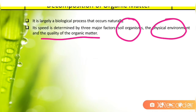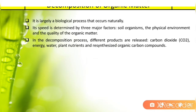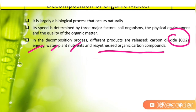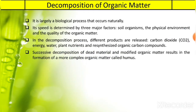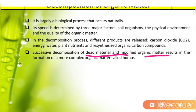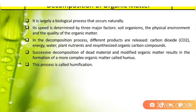In this decomposition process, different products are released such as carbon dioxide, energy, water, plant nutrients, and re-synthesized organic compounds. Successive decomposition of dead material and modified organic matter results in the formation of more complex organic matter called humus.